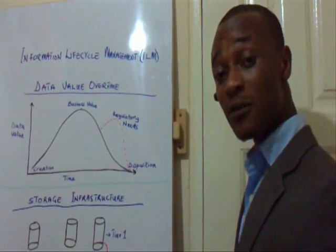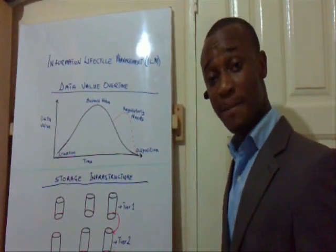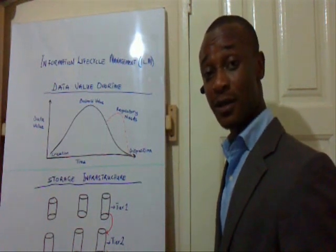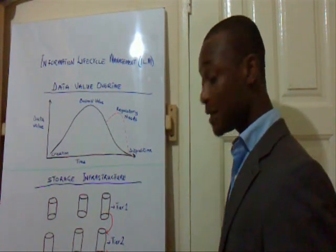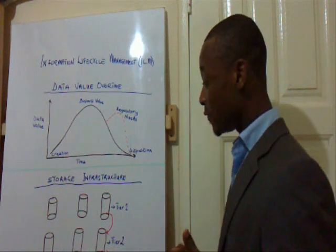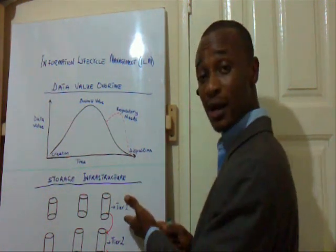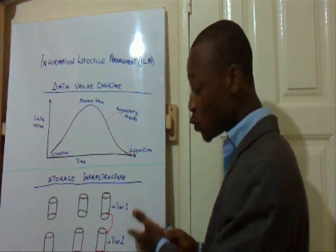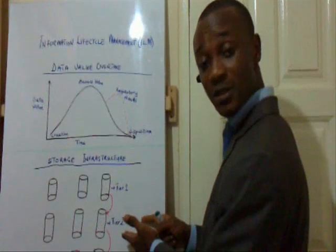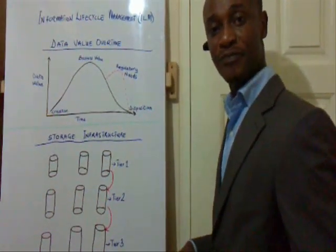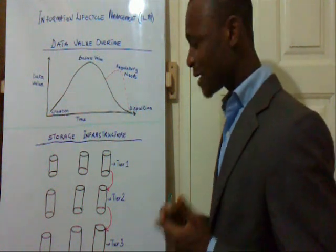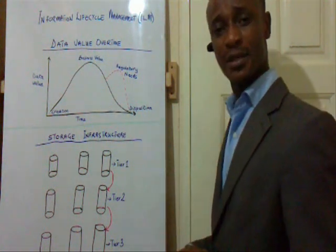We realize from the concept of ILM that all information value is not the same, so we can't treat every piece of information equally. Therefore, we need to align high value information with Tier 1, which is the high performance storage system, and those with less value on Tier 2 and Tier 3. The challenge is, how do we identify, classify, and then migrate information across the storage tiers?